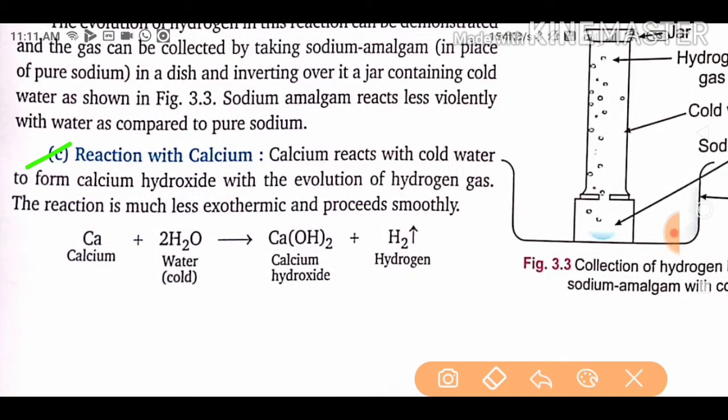Calcium reacts with cold water to form calcium hydroxide with the evolution of hydrogen gas. This reaction is much less exothermic and proceeds smoothly — it is less vigorous compared to the reactions with sodium and potassium.